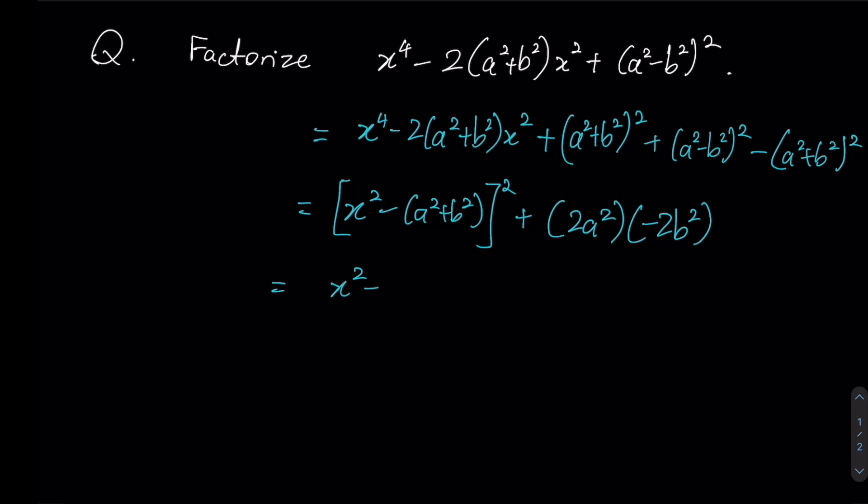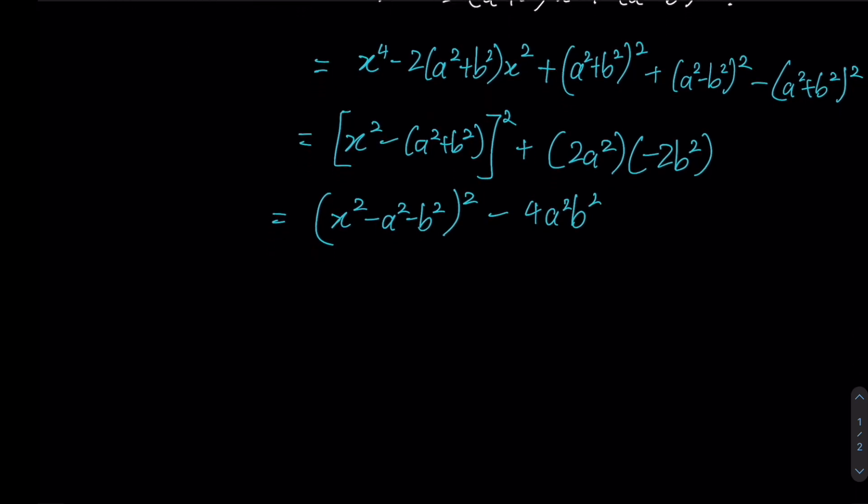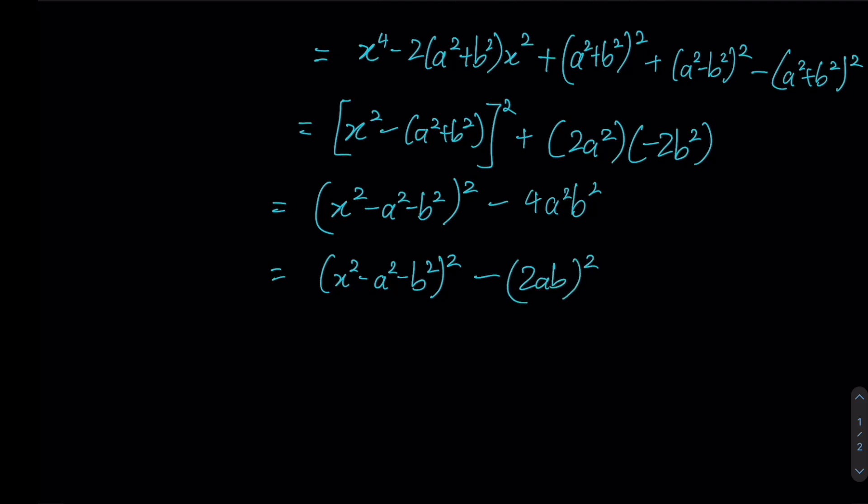So for my factorized form, I will simply expand this. Whereas for the two terms on my right, I can now write it as minus 4a²b². Now at this stage, notice that actually this term is a square number by itself. And since it is equals to (2ab)², we now again have another opportunity to apply a² minus b² again.